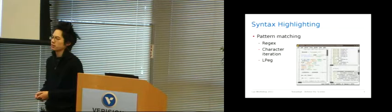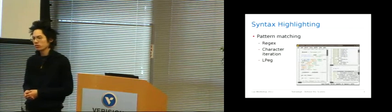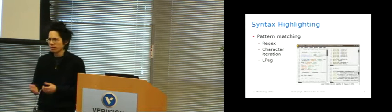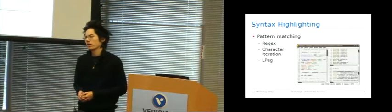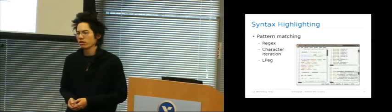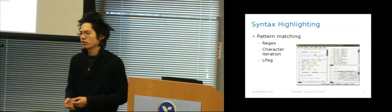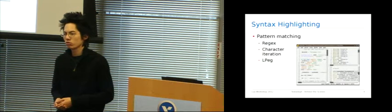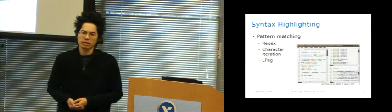So, syntax highlighting. We're all familiar with it. It's the stuff that highlights our code, makes it easier to read, makes it easier to spot errors when we write it. But how exactly do editors do syntax highlighting? Well, syntax highlighting is really just a form of pattern matching. So some editors use regular expressions. They make multiple passes through the text, they mark their matches, and they highlight those matches appropriately. Other editors use character iteration, which requires just a single pass, but it's much more complex due to its granularity. It's kind of like a giant state machine. But TextAdept uses LPEG.